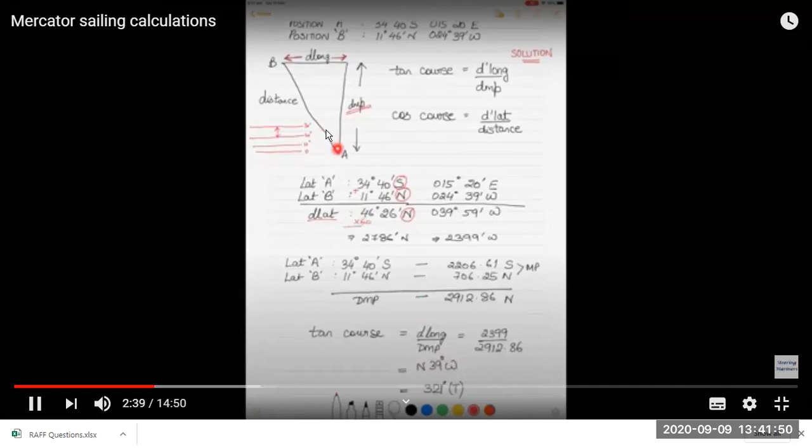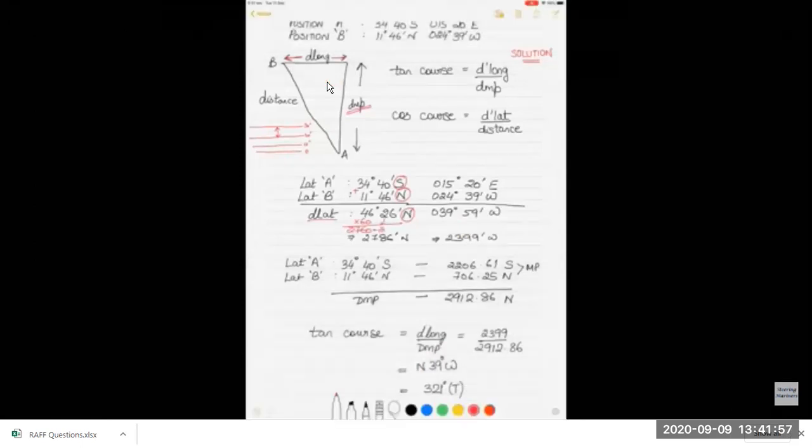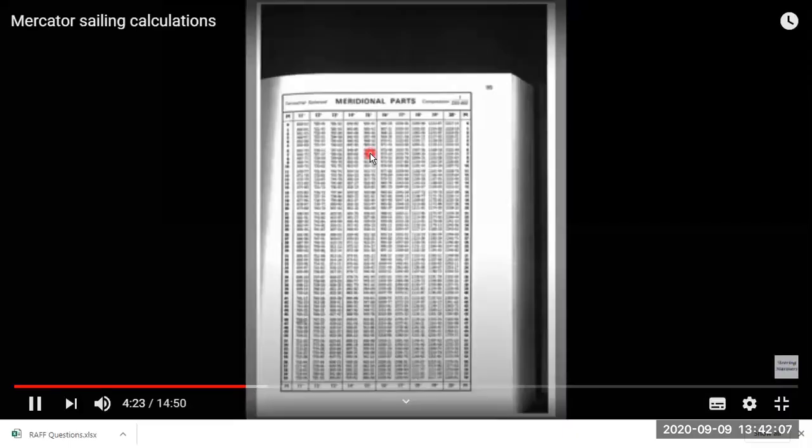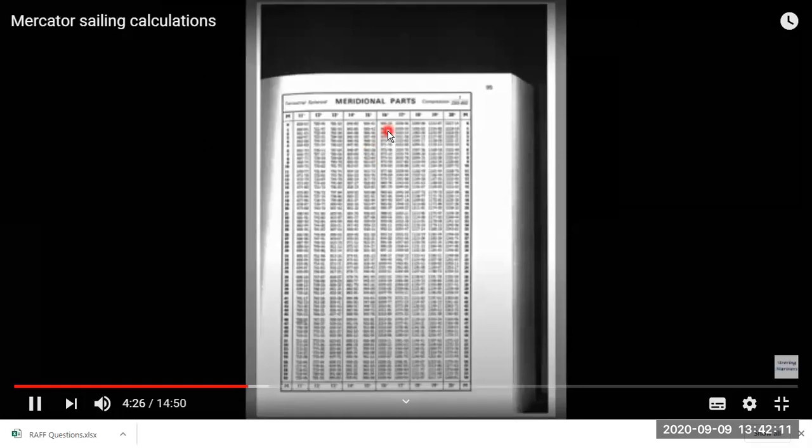Now we go further. This is the Norie's table where we are getting the meridional parts for the degrees, and we can calculate like this.